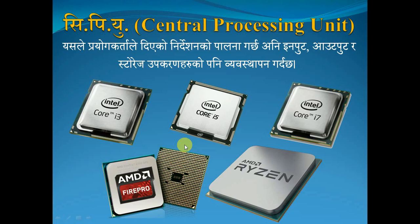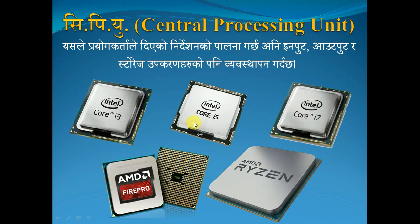There are two main CPU brands — Intel and AMD. Intel makes processors like Core i3, Core i5, and Core i7. AMD also makes competitive processors. The latest versions include gaming processors.